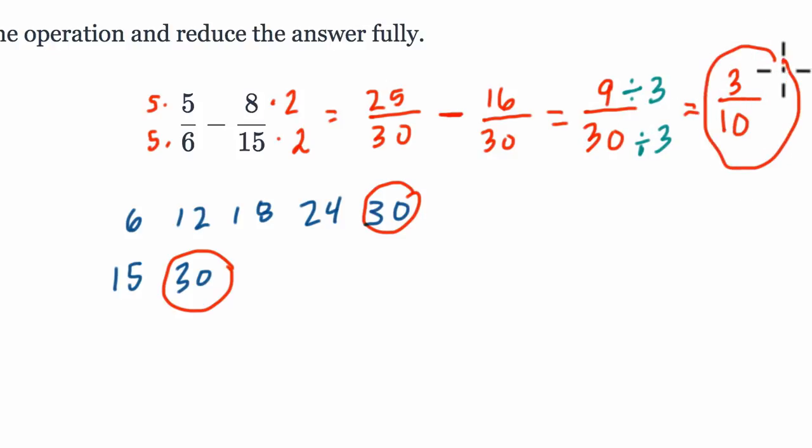3 and 10 have no other common factors other than 1, so it's been reduced, and we're done. All right, I hope this helped.